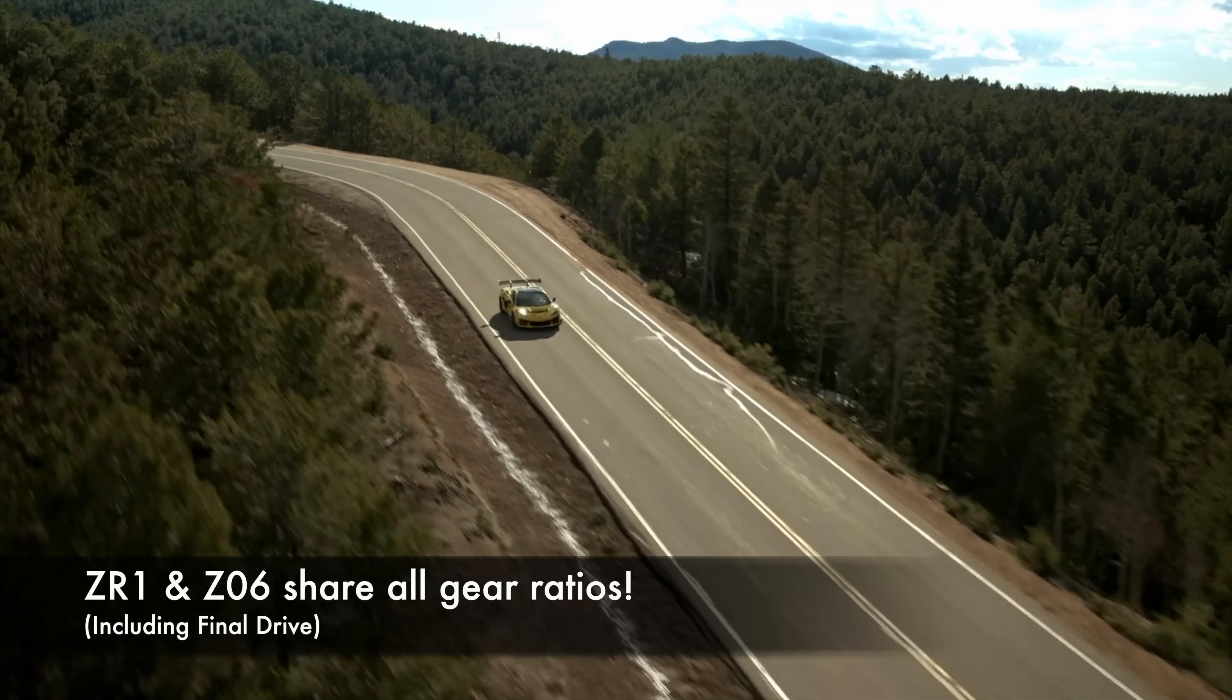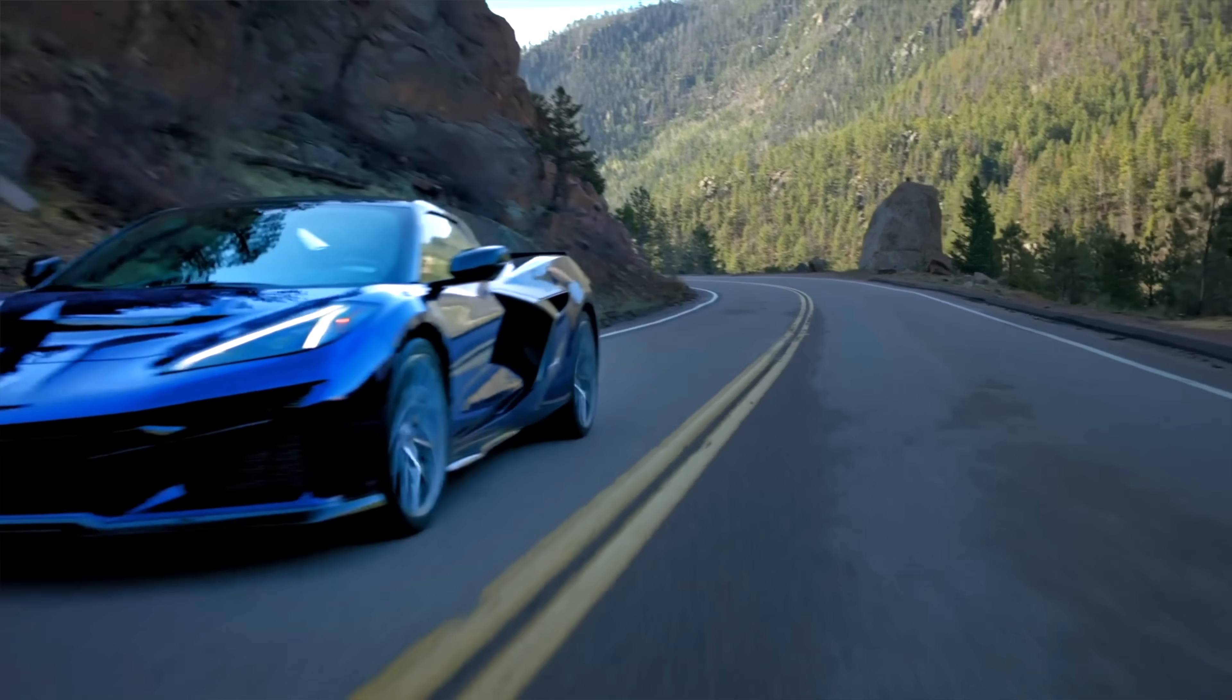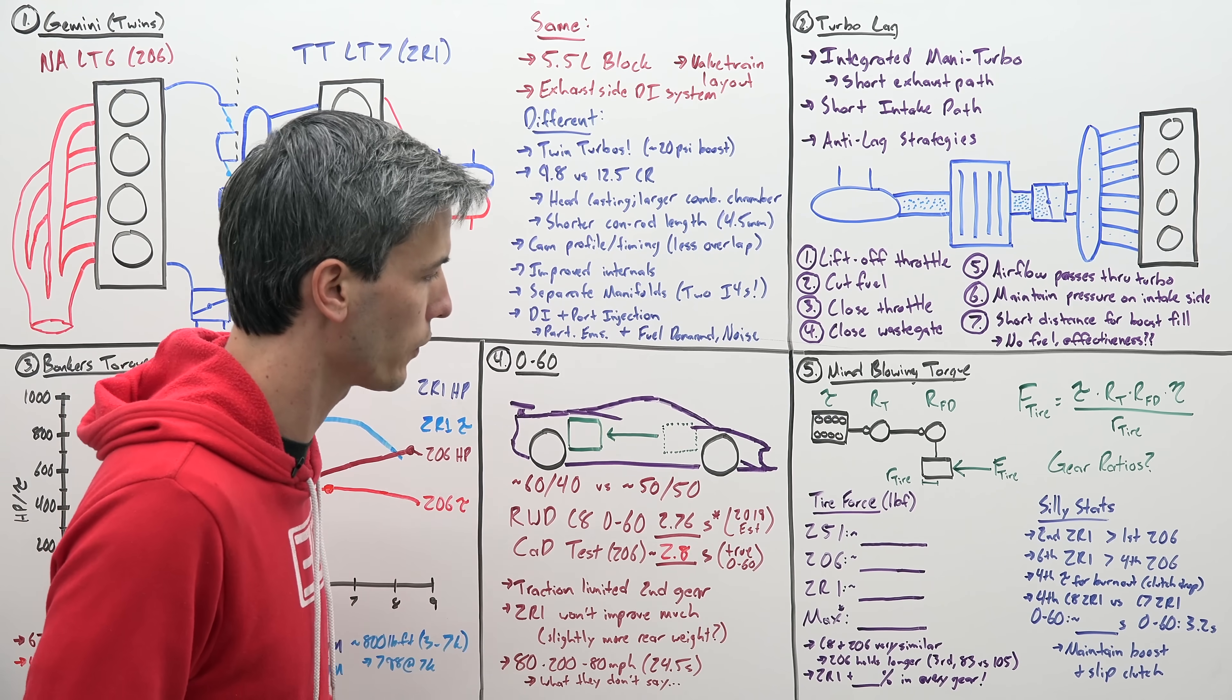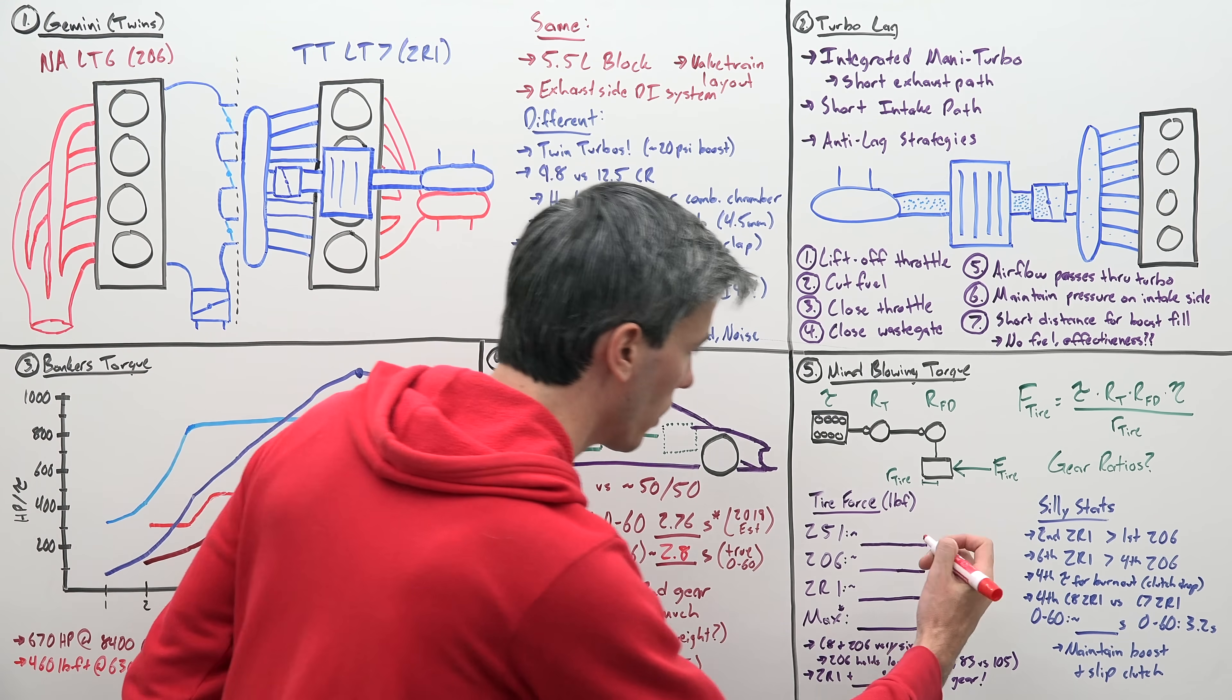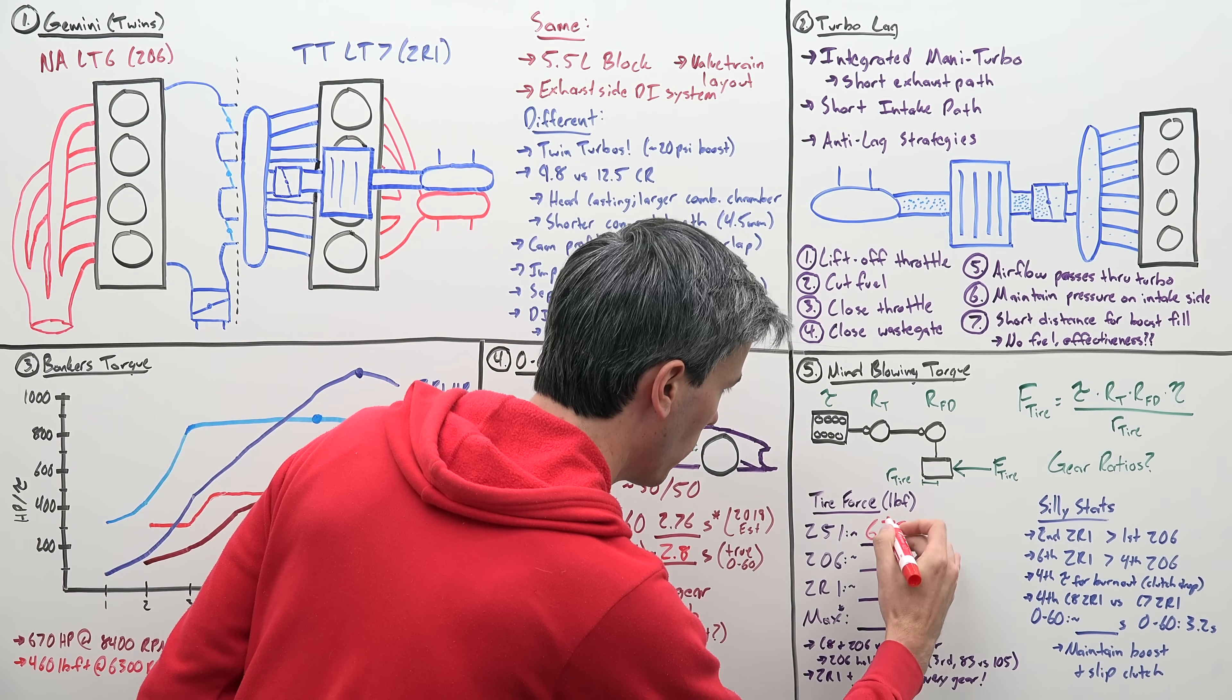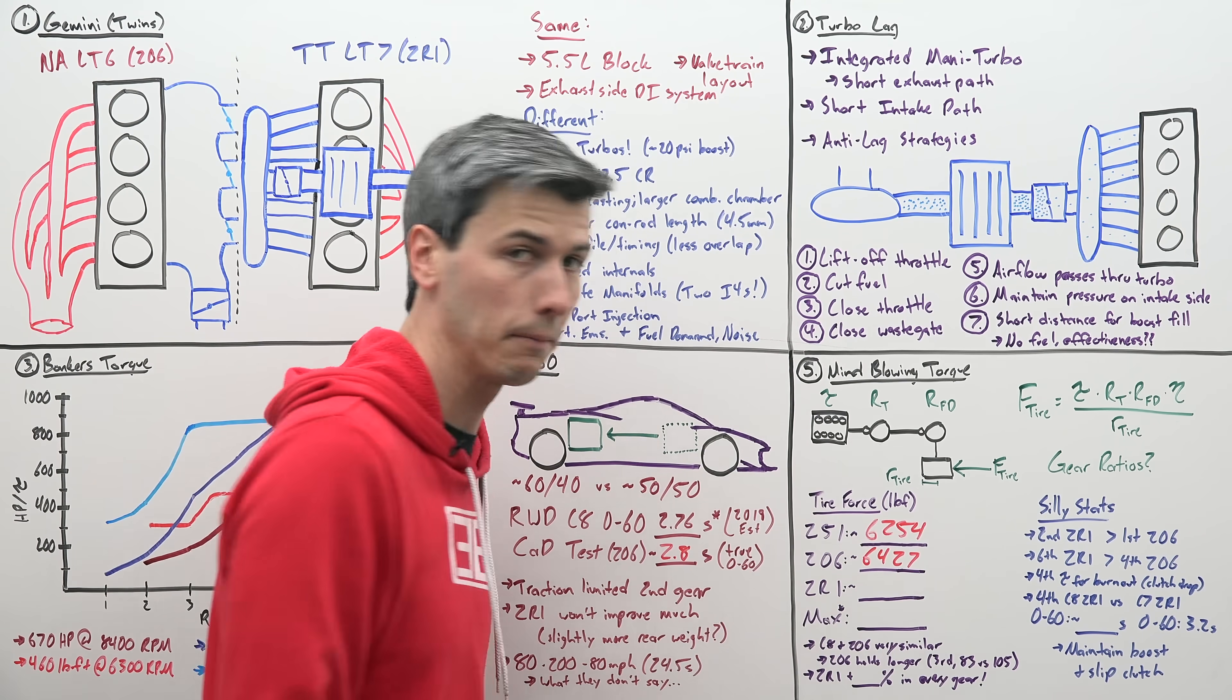But we need to know the gear ratios of the Corvette. Well, Tremec does provide the gear ratios for the C8 transmission, and GM confirmed the ZR1 does use the exact same gear ratios and same final drive as the Z06, though the gears are physically wider—as in thicker—in order to accommodate the added torque. Alright, so let's calculate what is the force that the tires are pushing against the ground in first gear at peak torque in three different options: the standard C8 Z51, the Corvette Z06, and the Corvette ZR1. And we'll do all of these in first gear. And so for the Z51, that number is about 6,254 pounds of force. In the Z06, you know, much more powerful engine, right? Well, that number is only 6,427, so not much more.